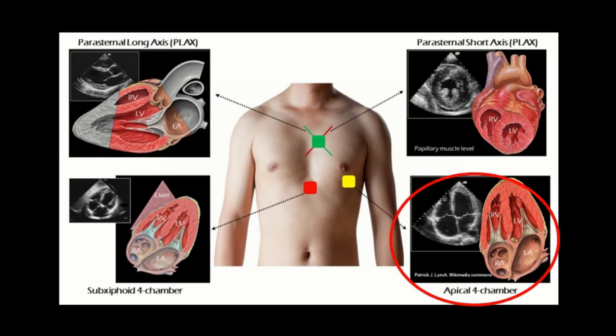For the apical 4-chamber view, the probe is placed near the cardiac apex, which is just medial to or at the midclavicular line in the fourth or fifth intercostal space, and the orientation marker should point towards the left side of the patient.